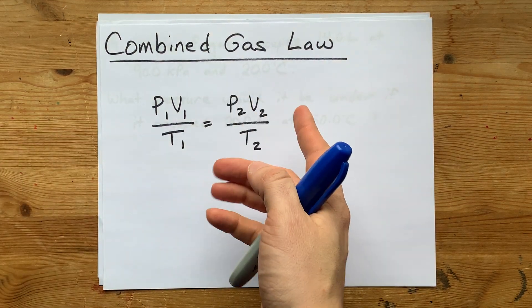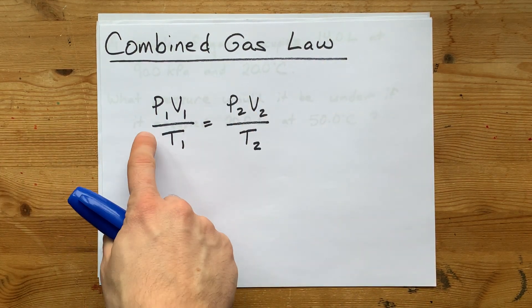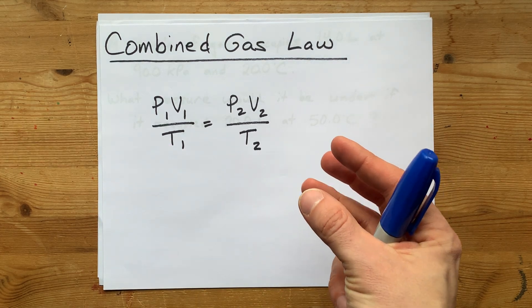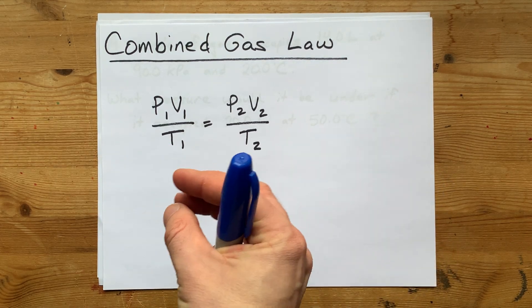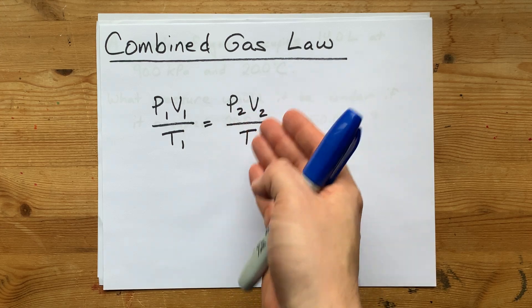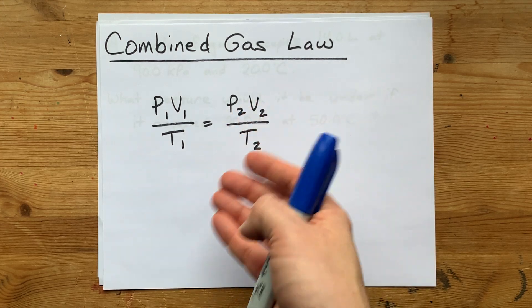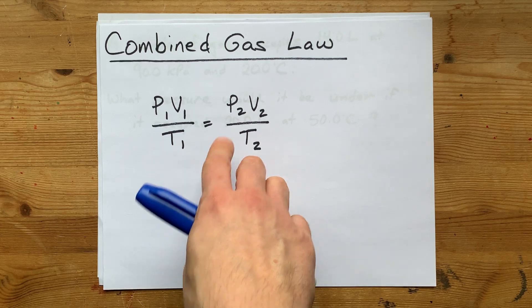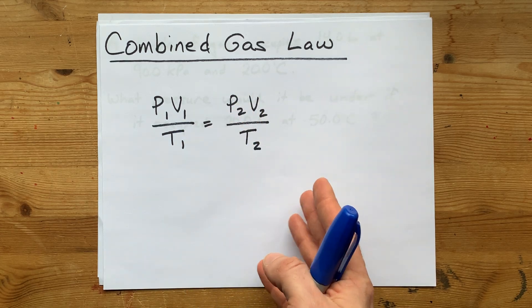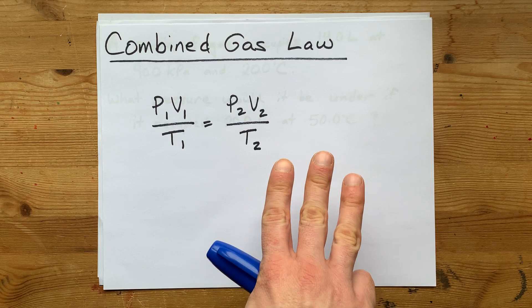The combined gas law is the idea that if you know the pressure, volume, and temperature of a sample of gas, and that same sample of gas is later at a known any two of pressure, volume, and temperature, you can solve for the other of the three variables. We're going to run through three examples of this.